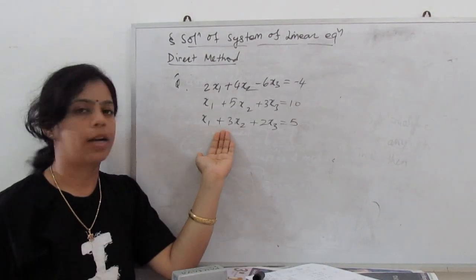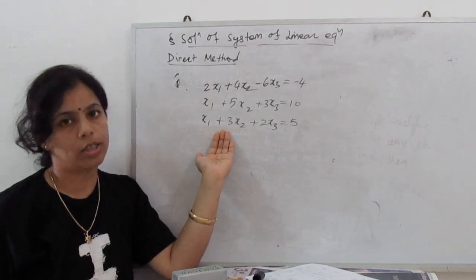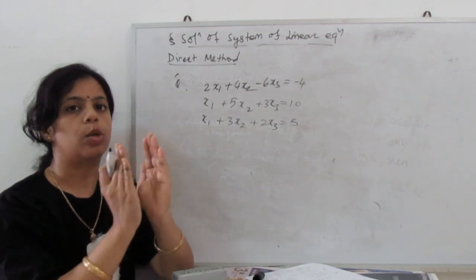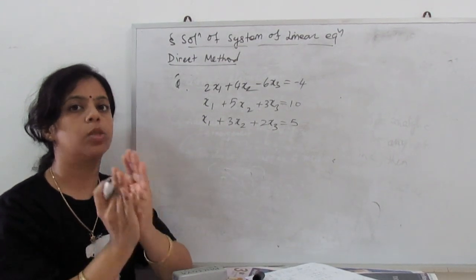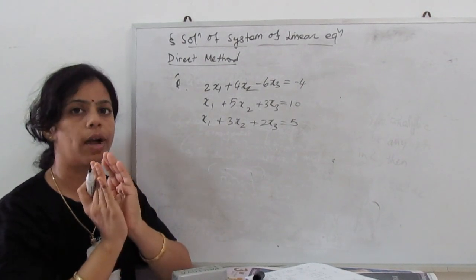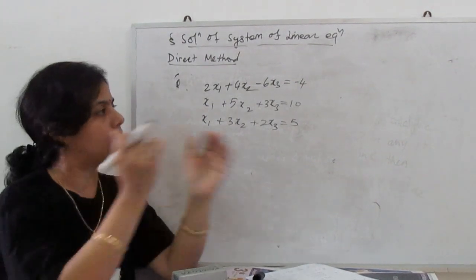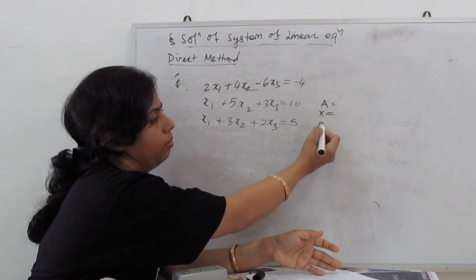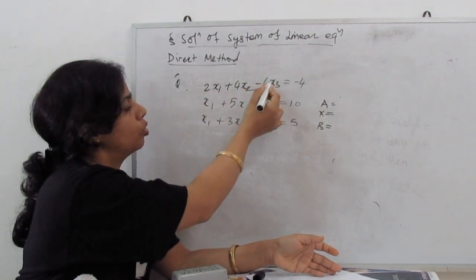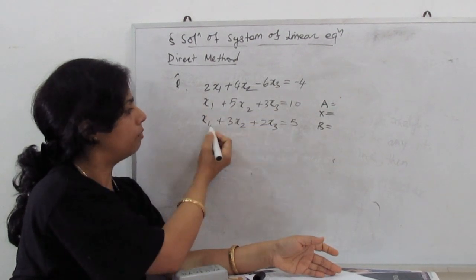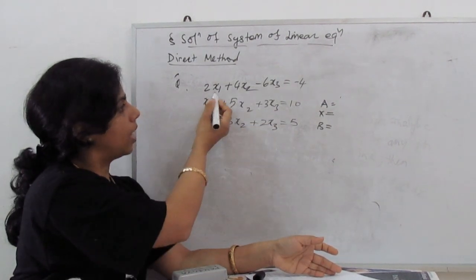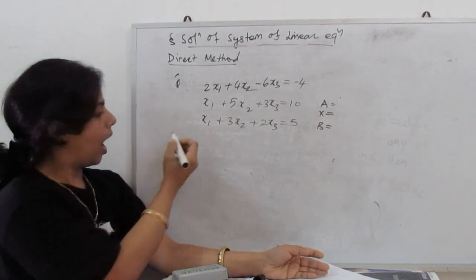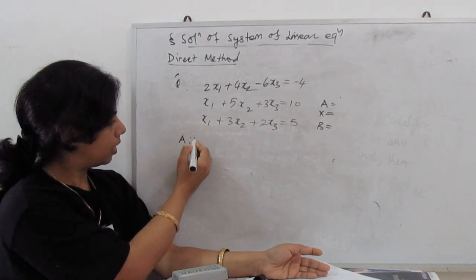Now I will proceed with one example so you can easily see how to solve using the Gauss elimination method. Step 1: arrange the equations into augmented form [A | B]. First identify matrices A, X, and B. A is the coefficient matrix: [2, 4, -6], [1, 5, 3], [1, 3, 2]. X is [x1, x2, x3] and B is [-4, 10, 5].